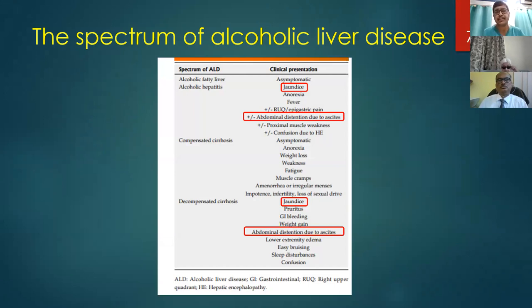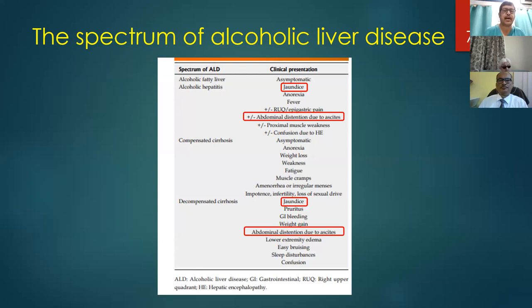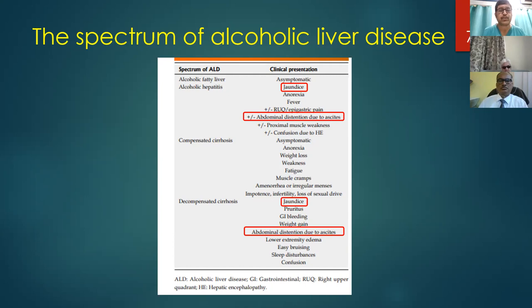Alcoholic hepatitis, unlike alcoholic liver disease which is mostly asymptomatic, is characterized predominantly by jaundice and systemic symptoms like low-grade fever, anorexia, and mild right upper quadrant pain. Ascites solely due to alcoholic hepatitis is unusual. Compare this with decompensated cirrhosis in an alcoholic, where jaundice is almost invariably accompanied by ascites. So simple jaundice suggests alcoholic hepatitis, but jaundice accompanied by ascites suggests decompensated alcoholic liver disease — the patient has become decompensated with the appearance of ascites.